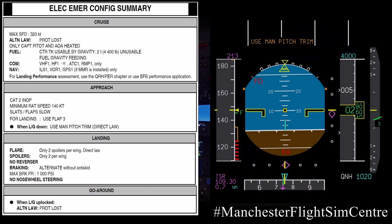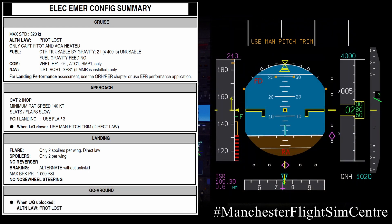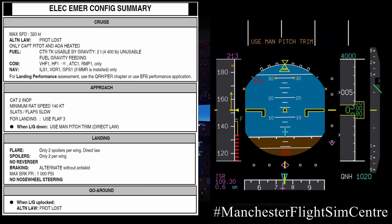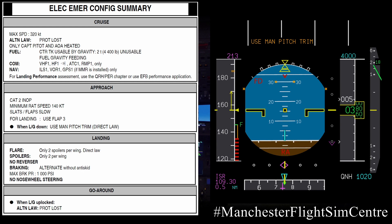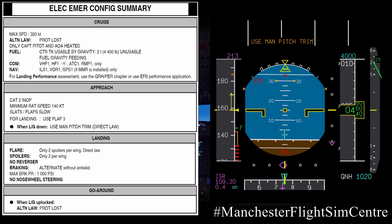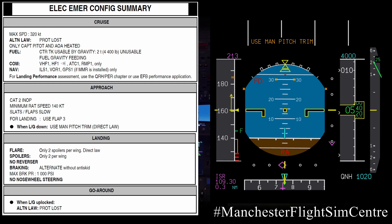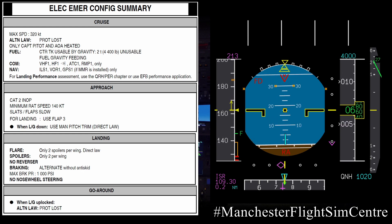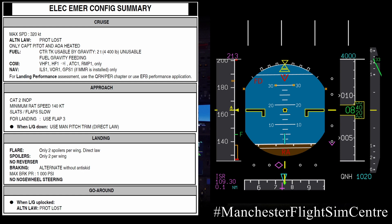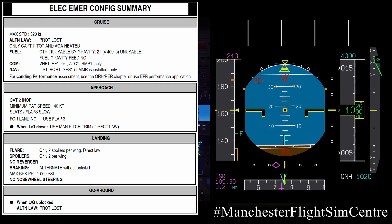The final consideration is for the go-around. While not specifically stated, the go-around will be in direct law, so the pilots need to consider their handling and the pitch-power coupling. The summary mentions that when the landing gear is uplocked, the aircraft will improve — it will upgrade the flight controls to alternate law with protection lost.